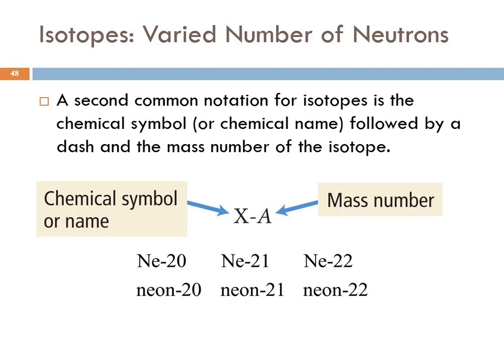That's one way to identify or represent the different isotopes. Another common way is to use either the chemical symbol or the chemical name, followed by a dash and the mass number. Here's the chemical symbol followed by the mass number. We could represent this as Ne-20 or Neon-20, Neon-21, Neon-22. This does not tell us what the atomic number is, but we have the element name, so all we have to do is look on the periodic table, and we can find the atomic number 10.